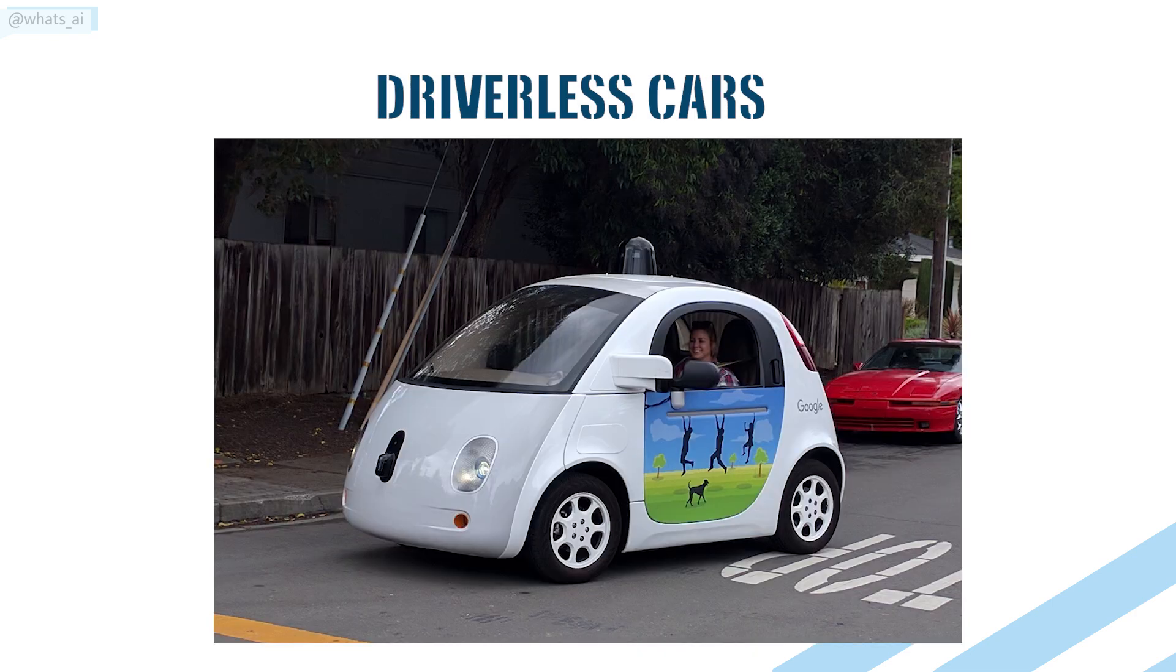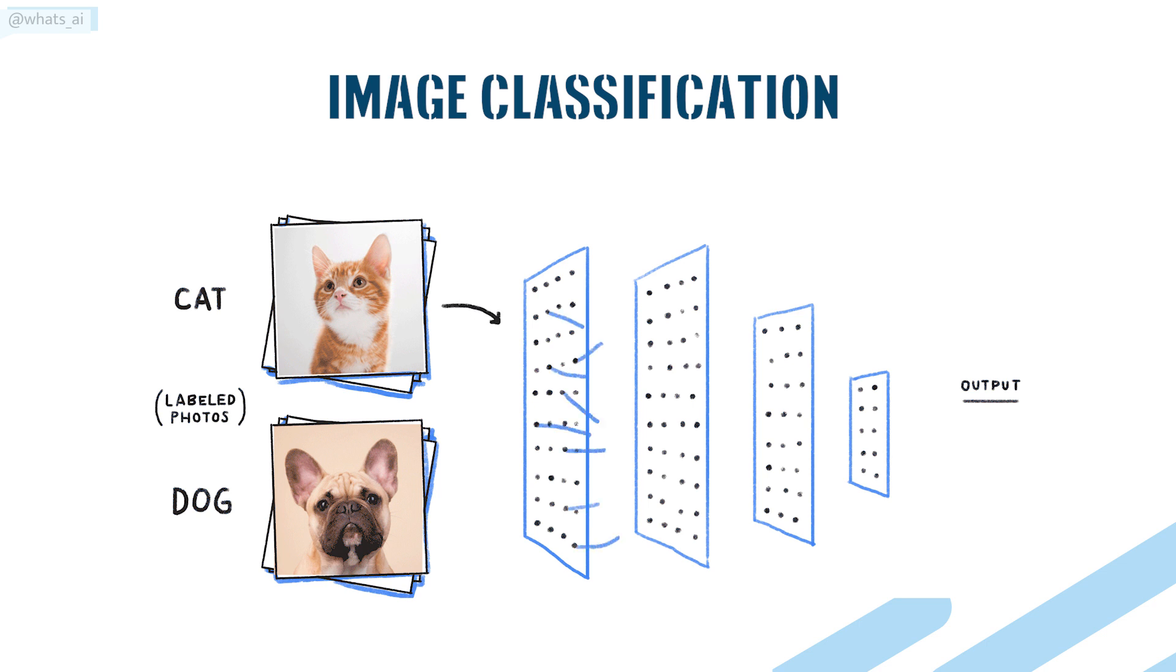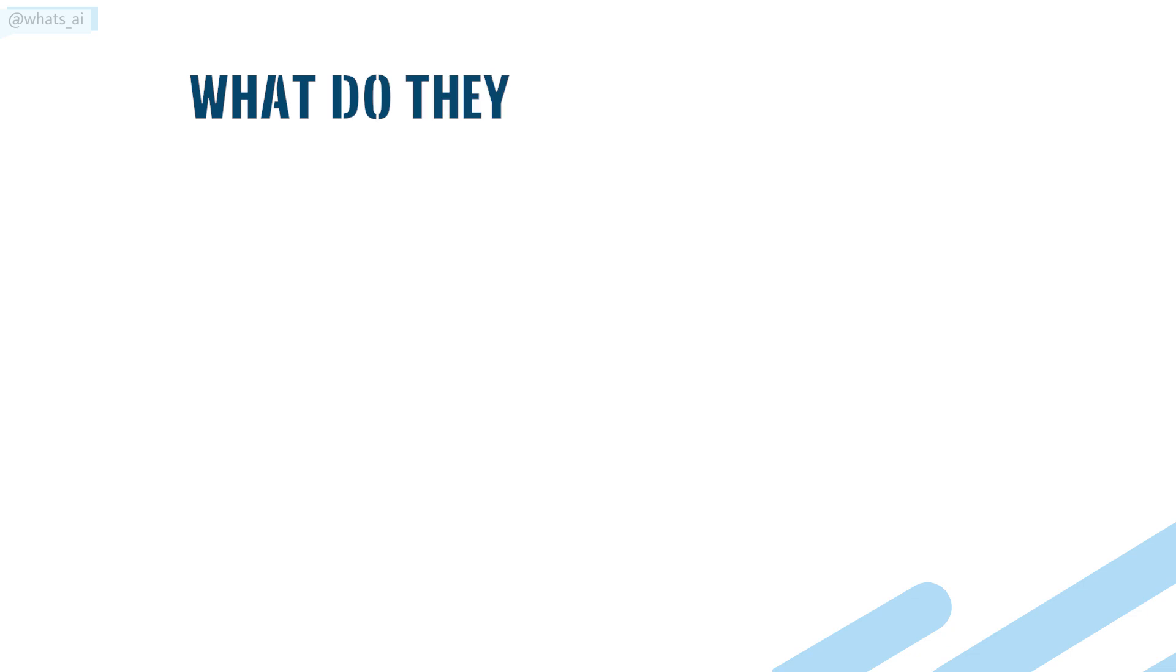Facial recognition, driverless cars, human-led robots, targeted ads, image classification... You've all heard of these powerful AI applications before. But do you know what do they all have in common?